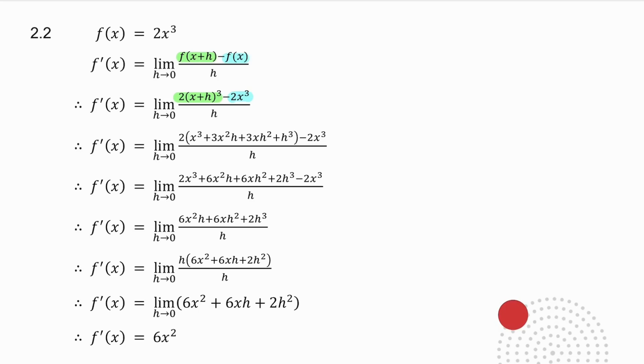Now I need to make h close to 0, so I make h tend to 0. So what does this get closer and closer and closer to, well the answer is 6x squared. So the derivative of f of x equals 2x cubed is 6x squared.